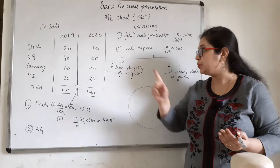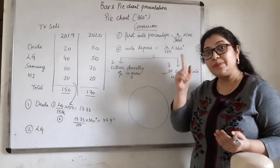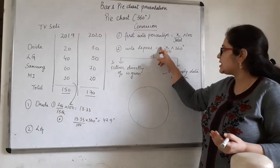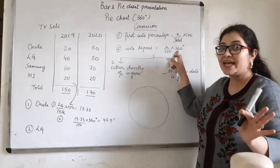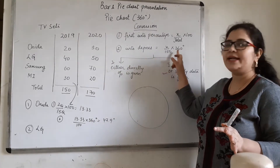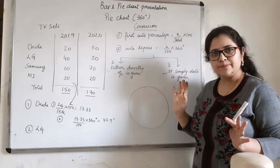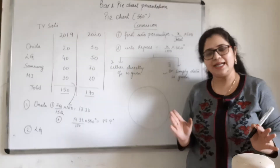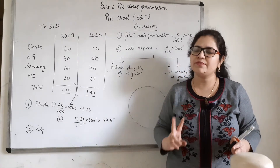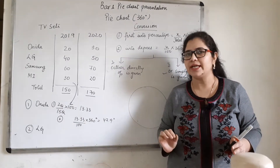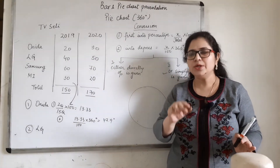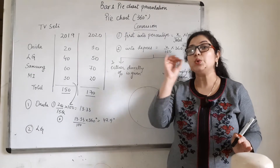Then step number two is to convert that percentage into degrees. How do we convert? X by 100 into 360 degrees. Here X is the percentage that came out from step one. That is: percentage upon 100 into 360 degrees. So either you have data given directly, not in percentages — then you follow two steps: step one, convert the data into percentage; step two, convert the percentage into degrees.